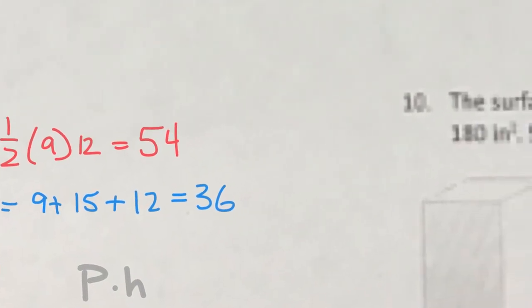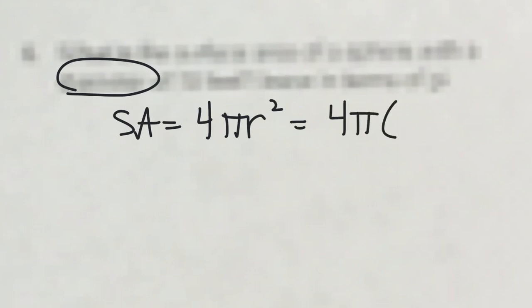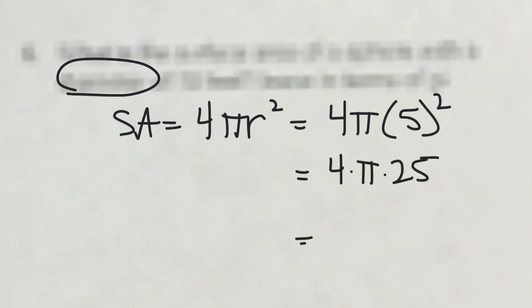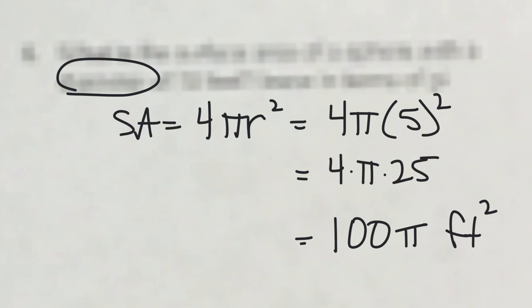Number 6: what's the surface area of a sphere with a diameter of 10? A sphere uses the formula 4 pi r squared. A diameter of 10 means a radius of 5. Leaving the answer in terms of pi, 4 times 25 gives 100 pi square feet as the surface area of the sphere.